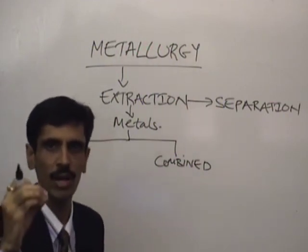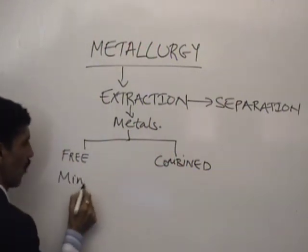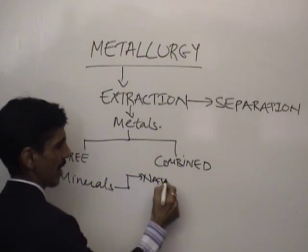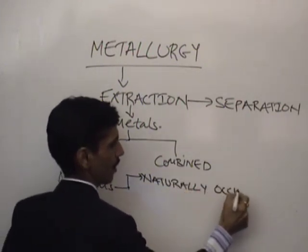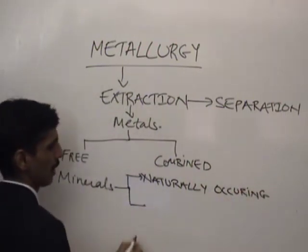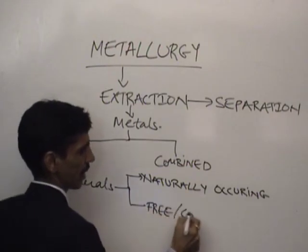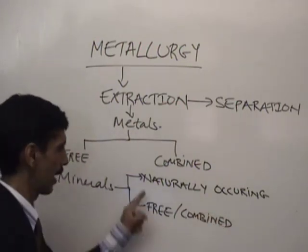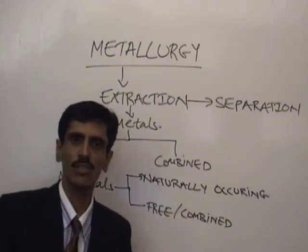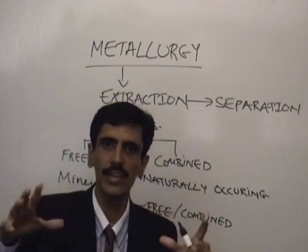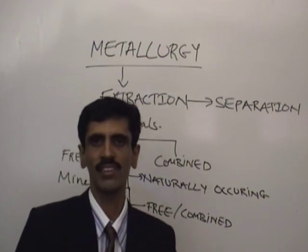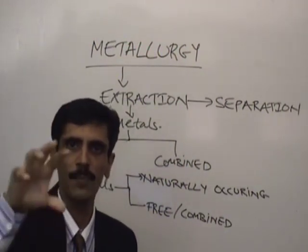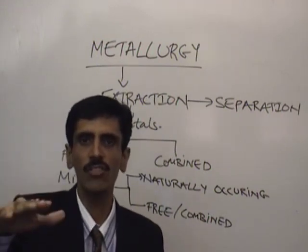Now, a basic term involved in metallurgy is what we call minerals. Whenever we talk about minerals, the substance has to satisfy two criteria. Criteria number one is that it must be naturally occurring. Naturally occurring refers to basically the earth's crust and atmosphere — these are the two things where man is not responsible for their creation. Whichever species are present there, we call them naturally occurring.